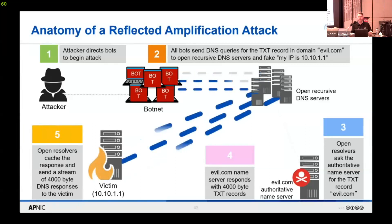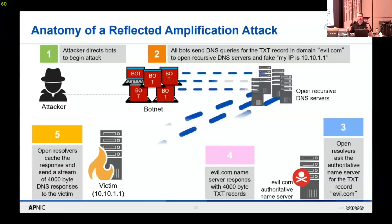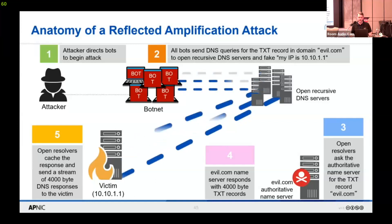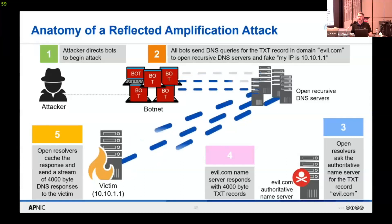This is especially useful from the attacker's point of view because most DNS servers are run by professional corporations on large networks with a lot of bandwidth. The bot computers could be home computers on home internet connections, but these DNS servers are much larger networked machines. So here you can have a very small request end up with a 4,000 byte response — that's what we call the amplification factor.